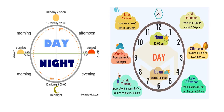Here is the picture which shows you the time. Early morning starts from about 2 hours before sunrise to about 7 am. Morning starts from sunrise to 12 pm. Late morning starts from about 10 am to 12 pm.